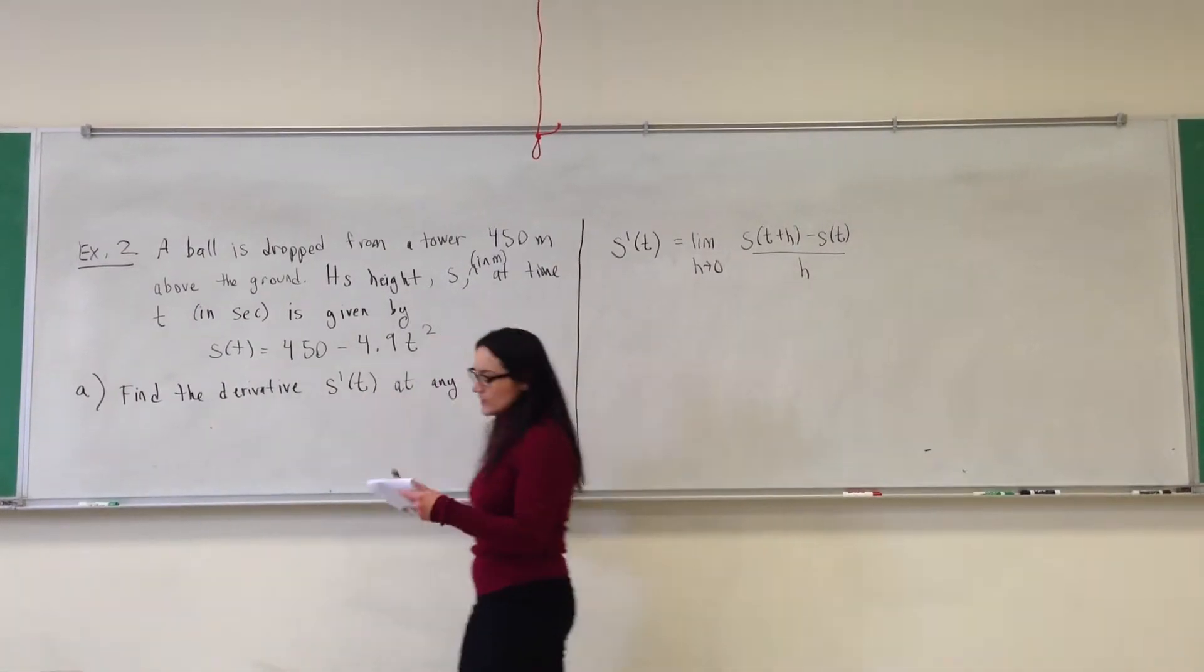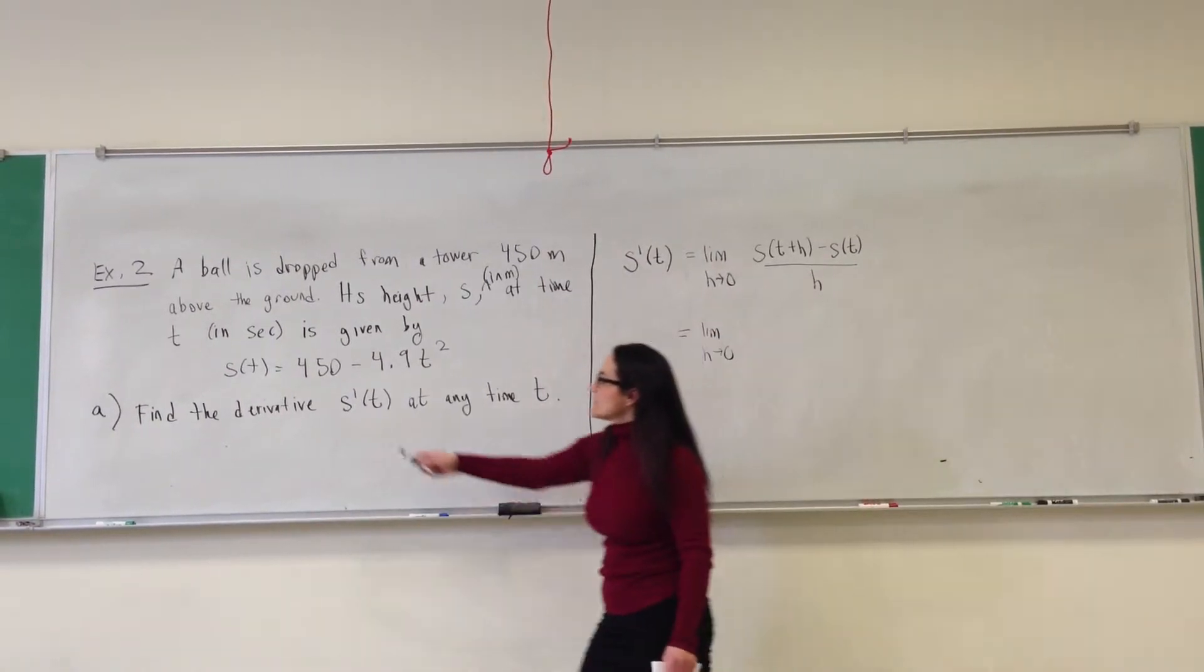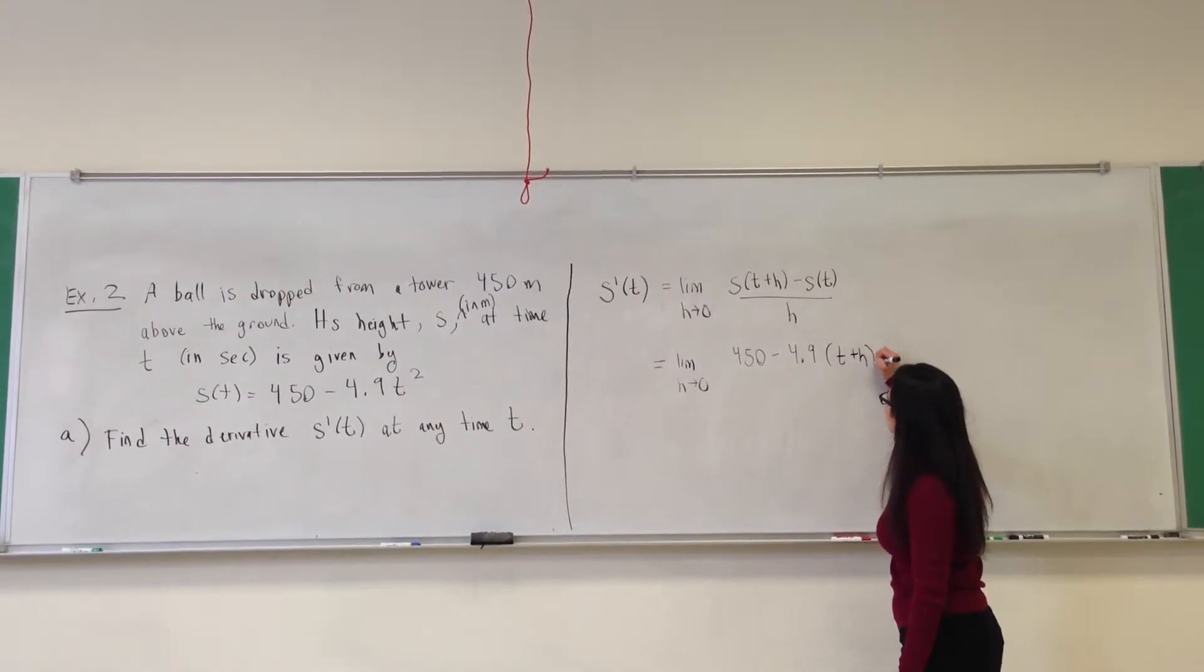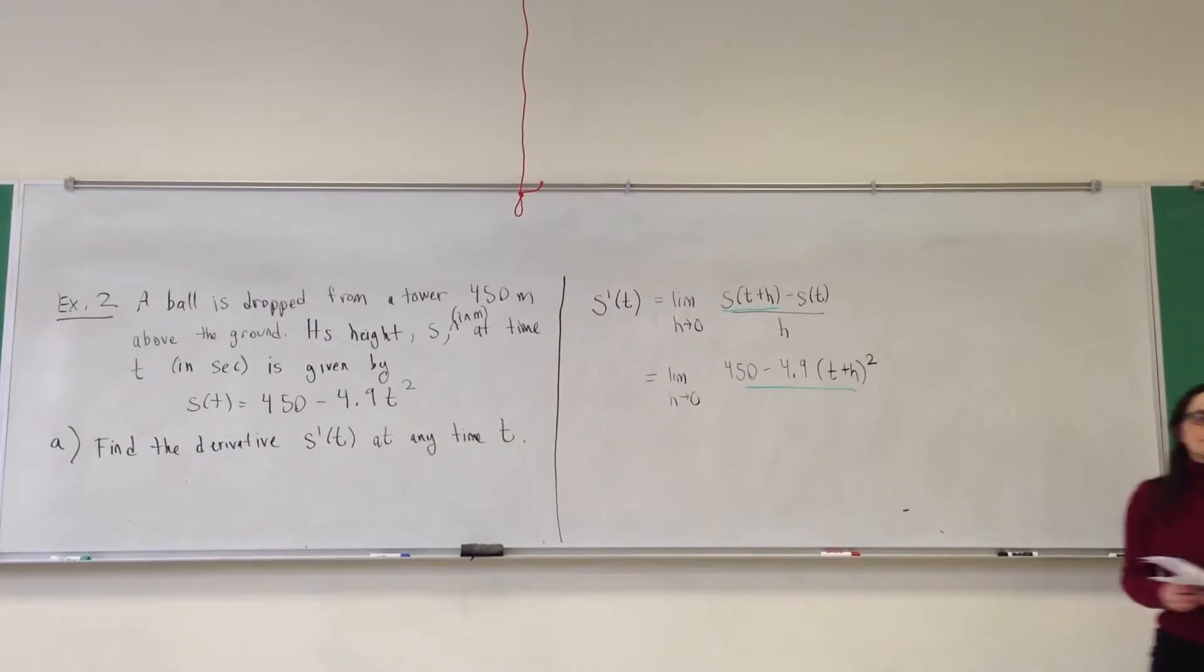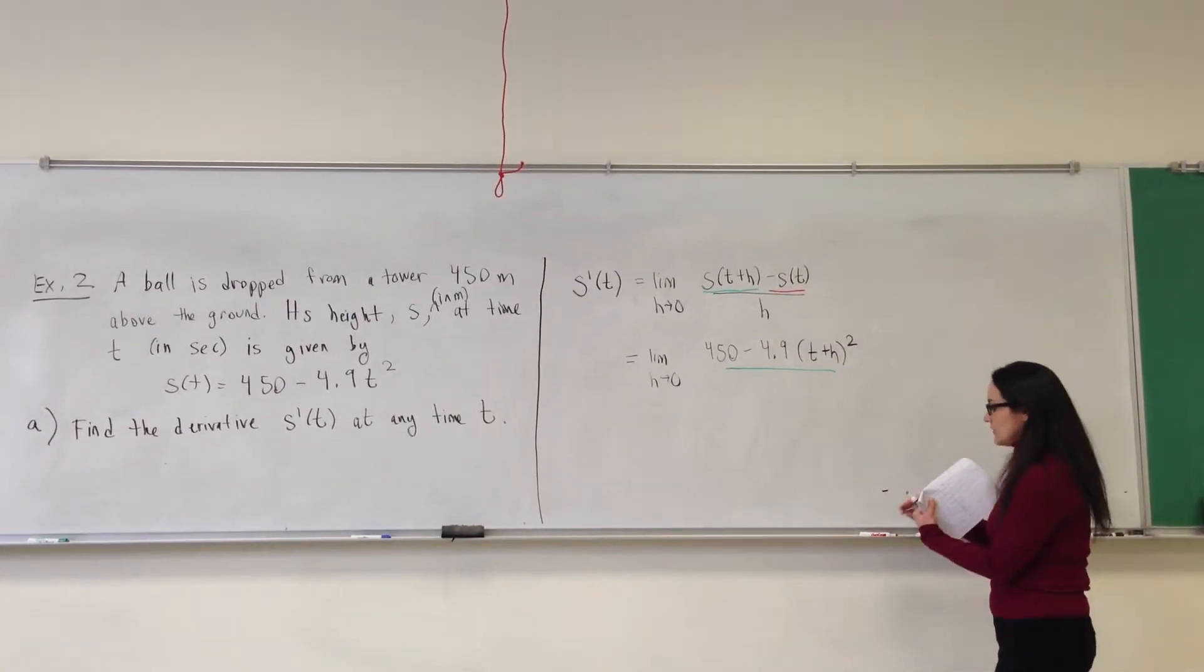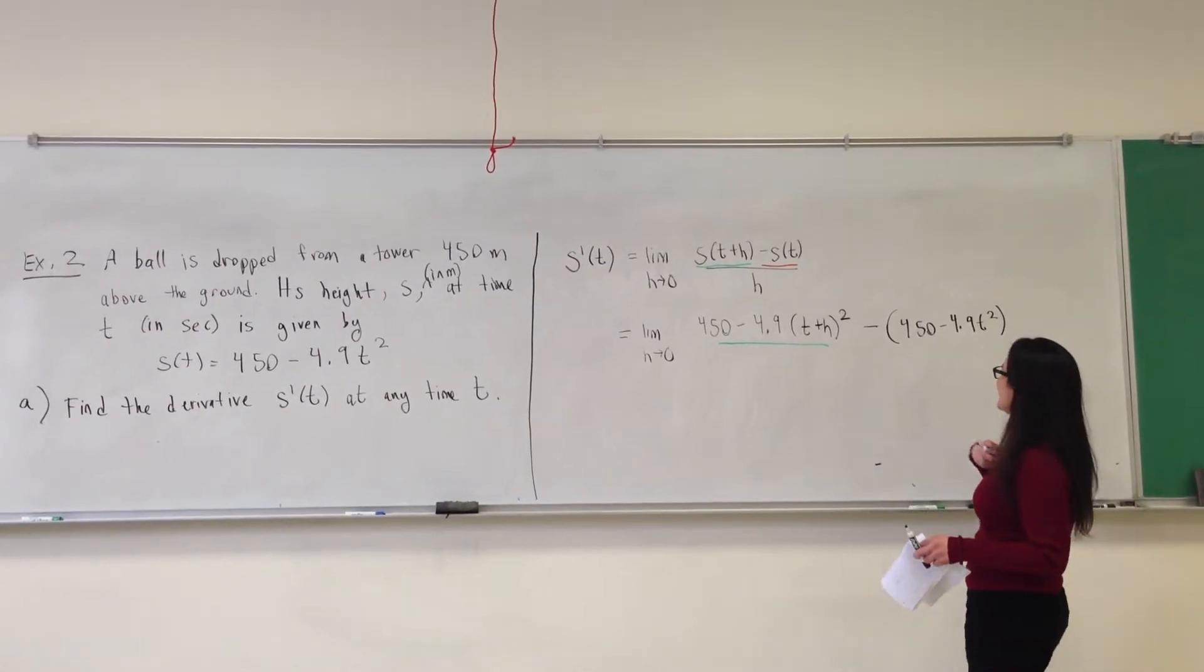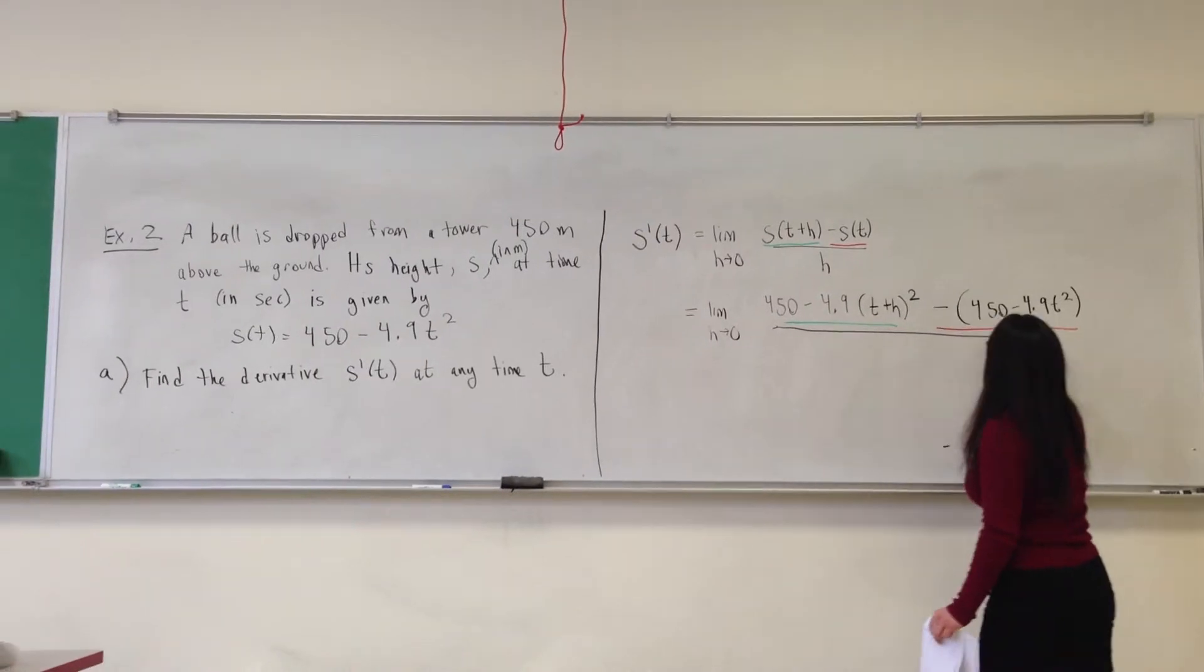Now we substitute in to our formula for s. So this is the limit as h goes to zero, s is 450 minus 4.9 t squared, I want to plug in t as t plus h. So I have 450 minus 4.9 times t plus h squared. And now I want to subtract s of t. So I have minus the whole thing, 450 minus 4.9 t squared, and the whole thing is divided by h.